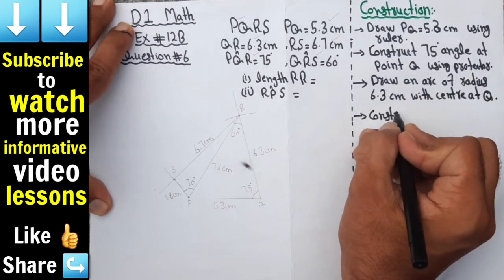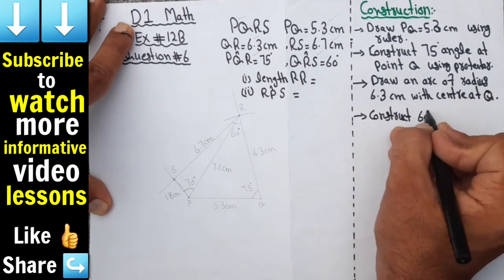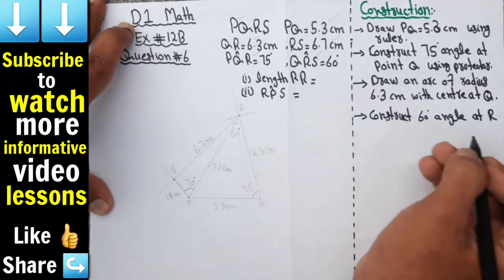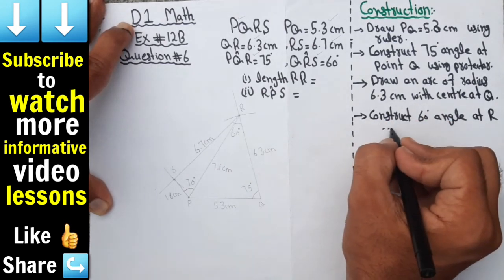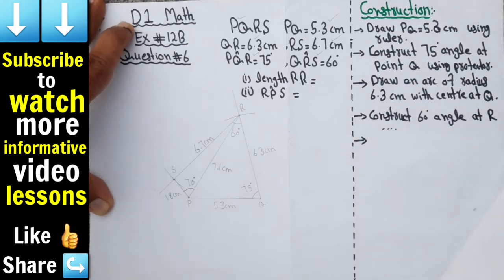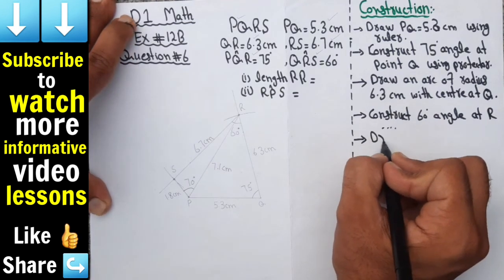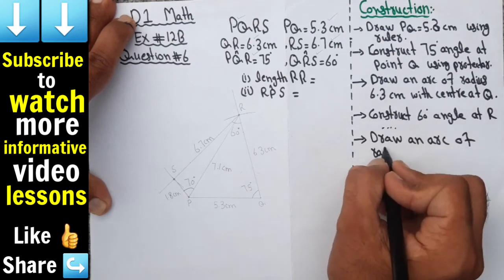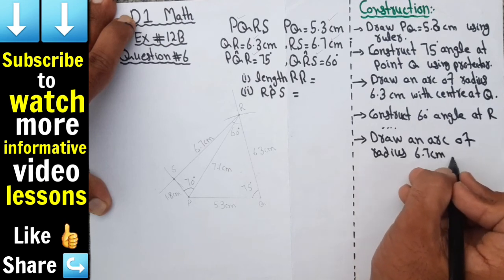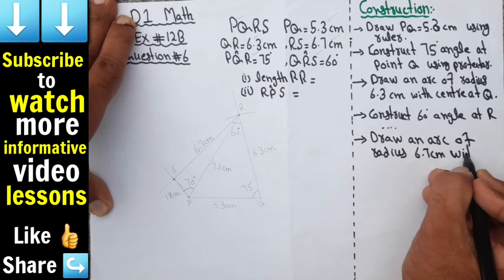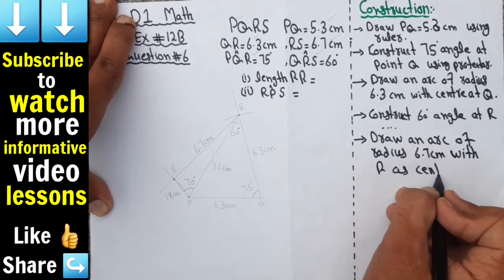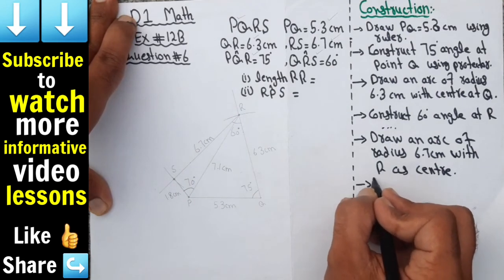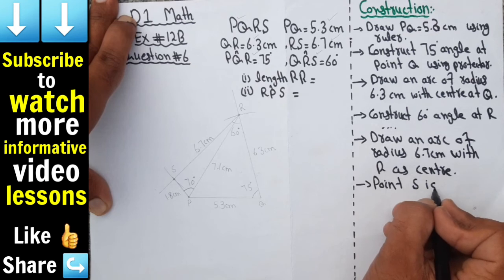Then construct 60 degree angle at R using protractor. Then we draw an arc of radius 6.7 centimeter with center at R. Point S is obtained.